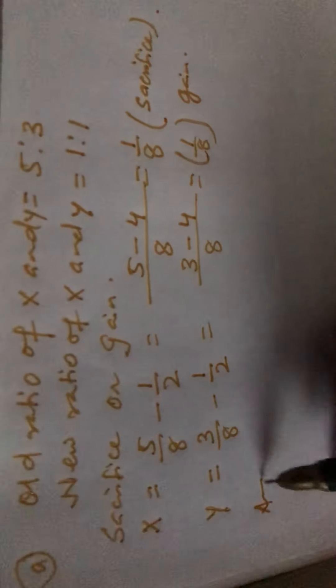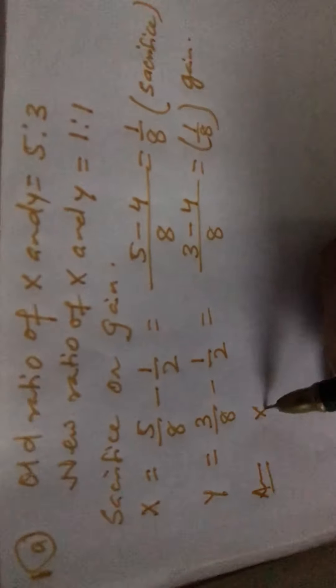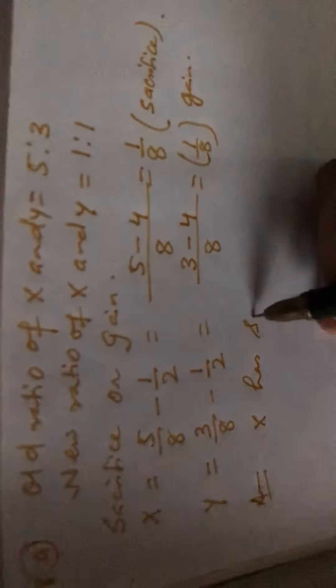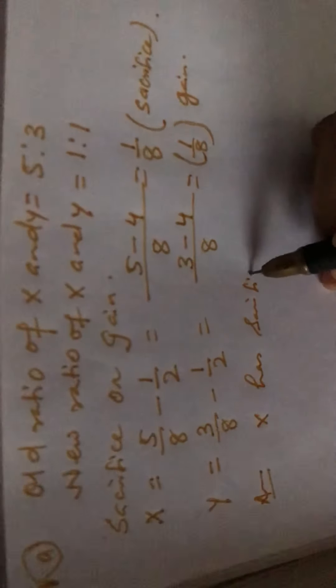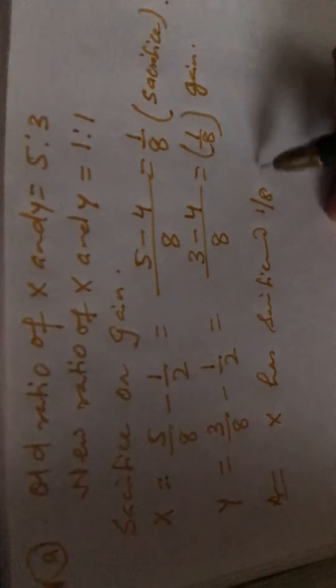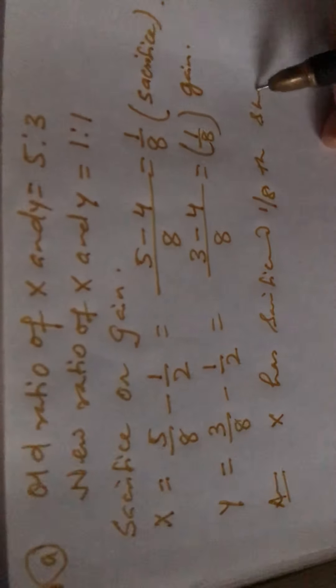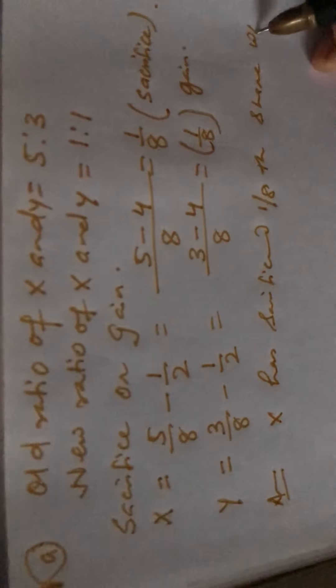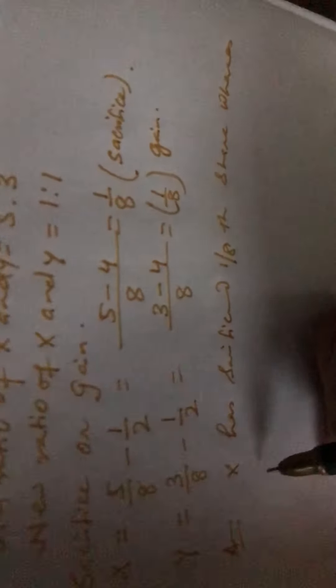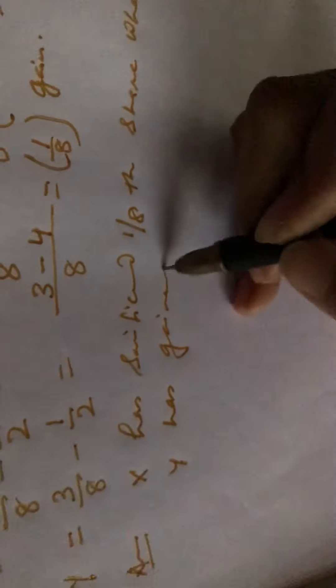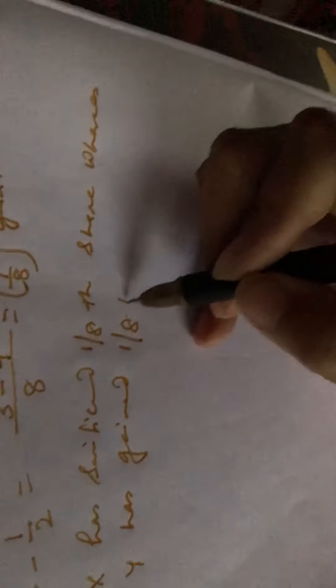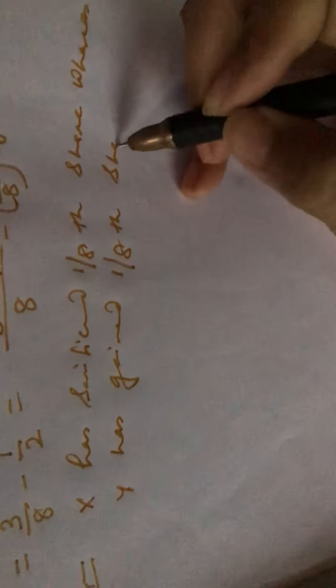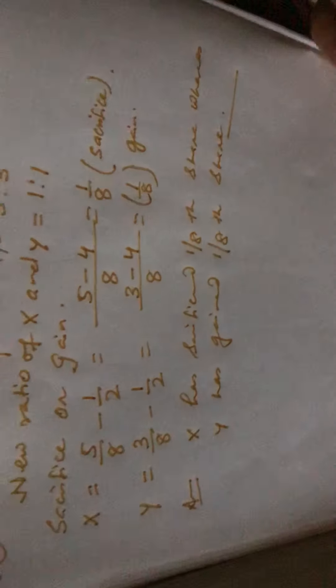So you have to write in answer, X has sacrificed 1 by 8. Whereas Y has gained 1 by 8 here. So this is the sum. Hope this is clear to you.